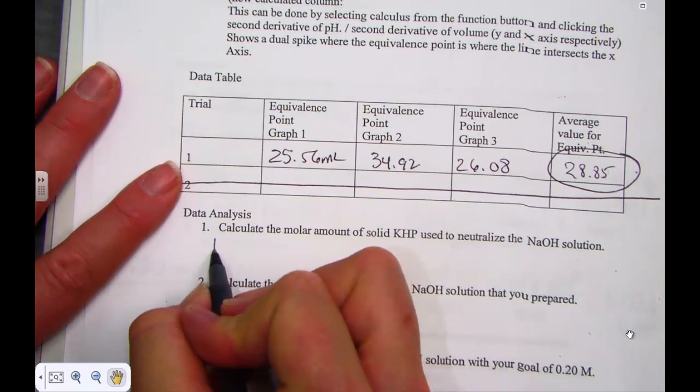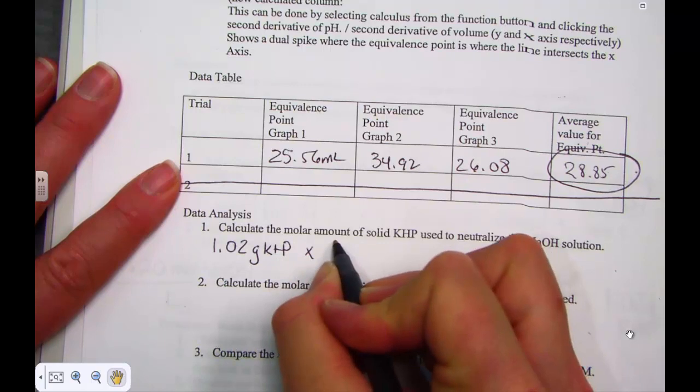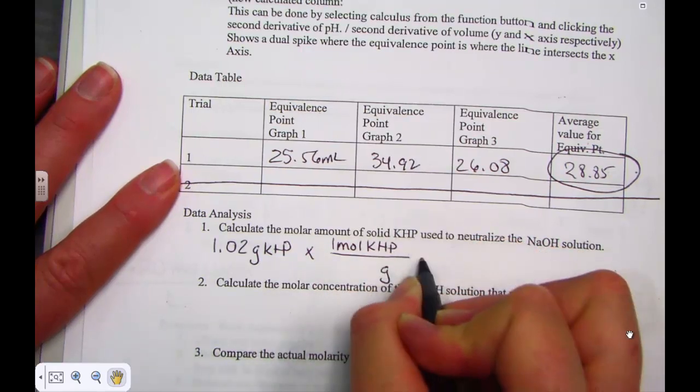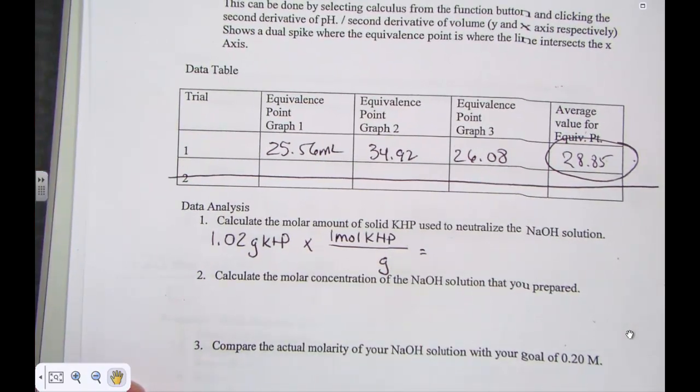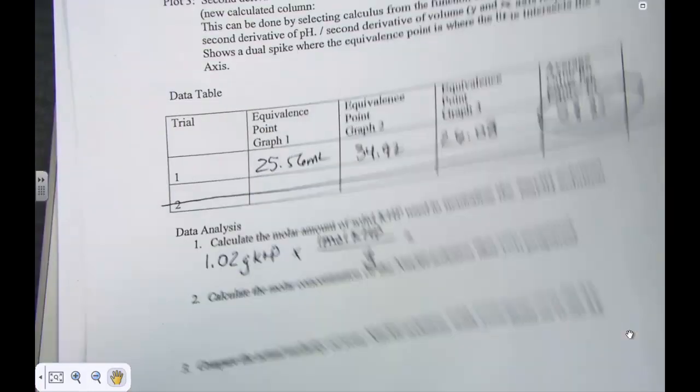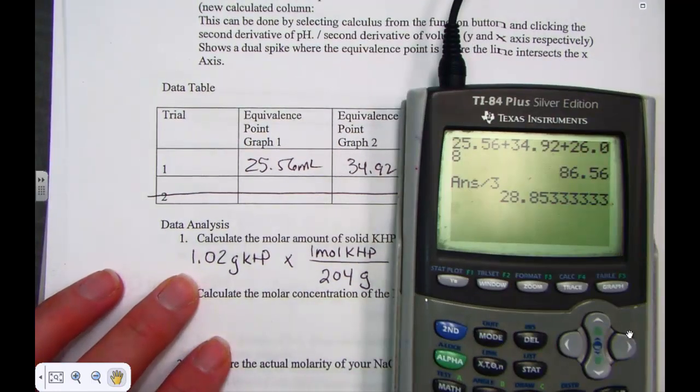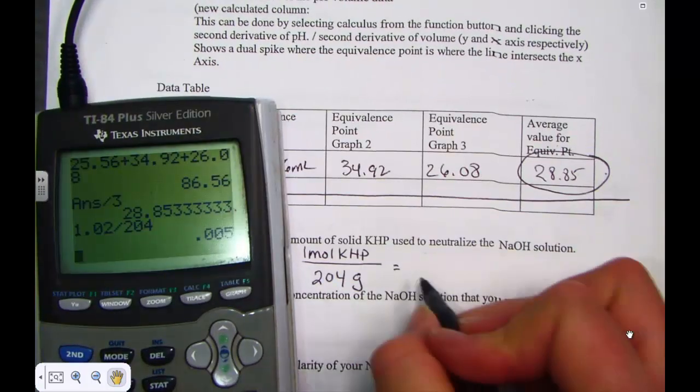So I had 1.02 grams of KHP to convert that to a mole. We know that we have just a little mole map problem, one mole of KHP over its molar mass, and all we've done here is converted grams to moles. Just a simple mole map problem for data analysis one. We did 2.04 from our pre-lab question, so I'll just borrow that from our pre-lab discussion. So 1.02 divided by the molar mass of 2.04, and I have 0.005 moles.